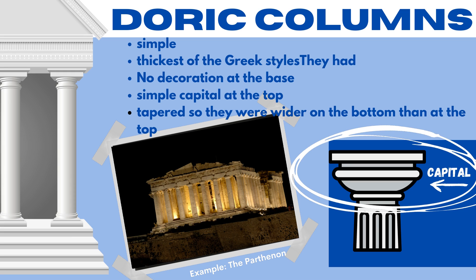We're going to start with the Doric columns. Doric columns, as seen in our example of the Parthenon, are the thickest and simplest of the Greek styles. They had no decoration at the base. At the top, the capital, which is where the columns are decorated, was very simple. Doric columns were also tapered, meaning they were wider on the bottom than at the top, which helped to give the illusion of symmetry. When I think of Doric columns, I just think: simple.